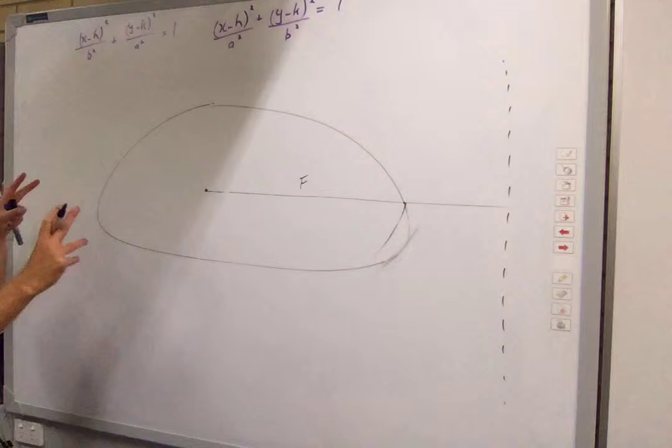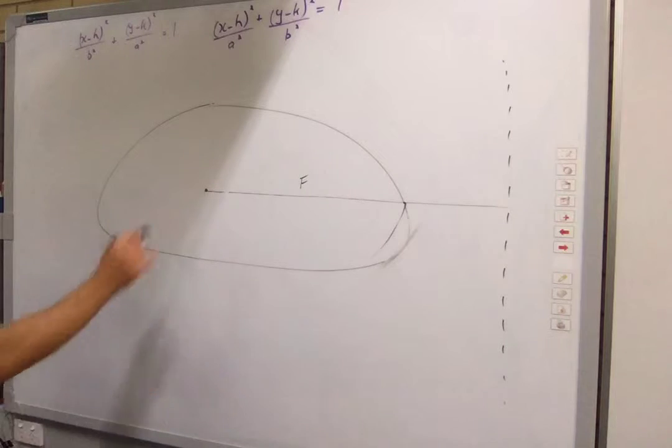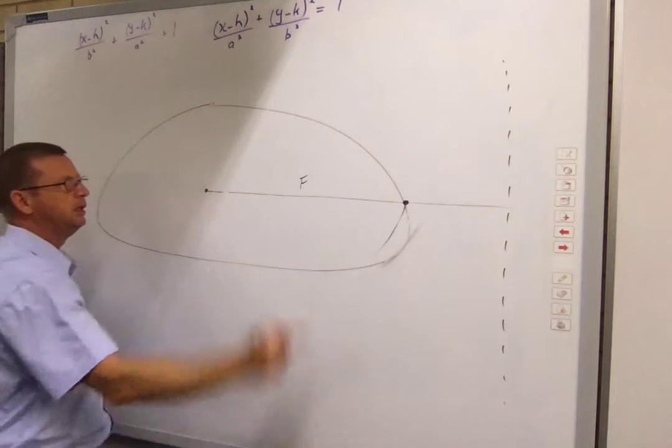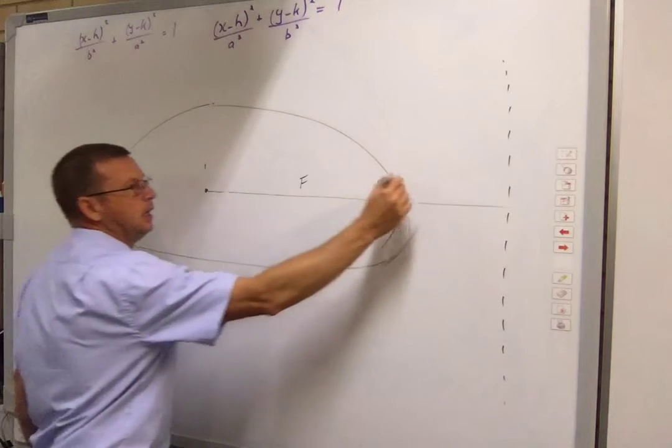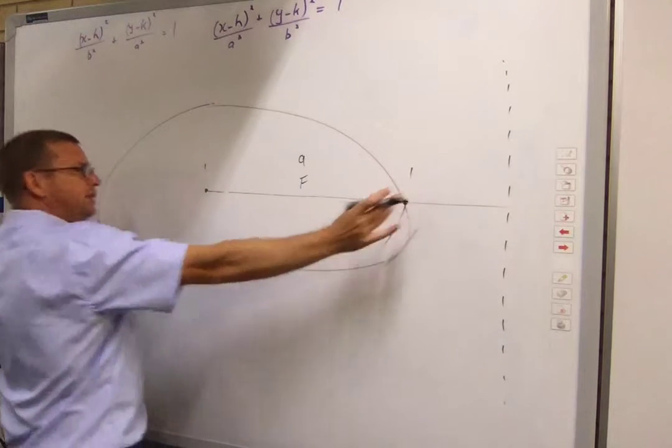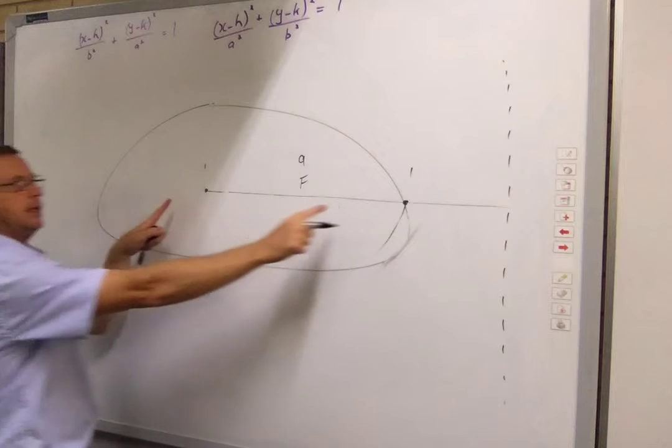Depending on how skinny and wide or how round it is, the distance from here to this biggest point over here is A. There's two A's. The distance from there to this is going to be B. So how wide is the ellipse? Two A. And how tall is the ellipse? Two B. Easy.